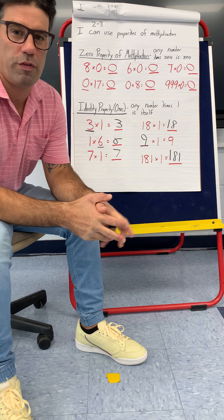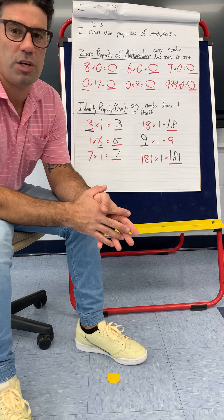So anything times zero is zero. Anything times one is itself. That's it, pretty simple, right? So today is two dash three, part one, nice and easy. And we're going to do a little bit more review of the other stuff too.